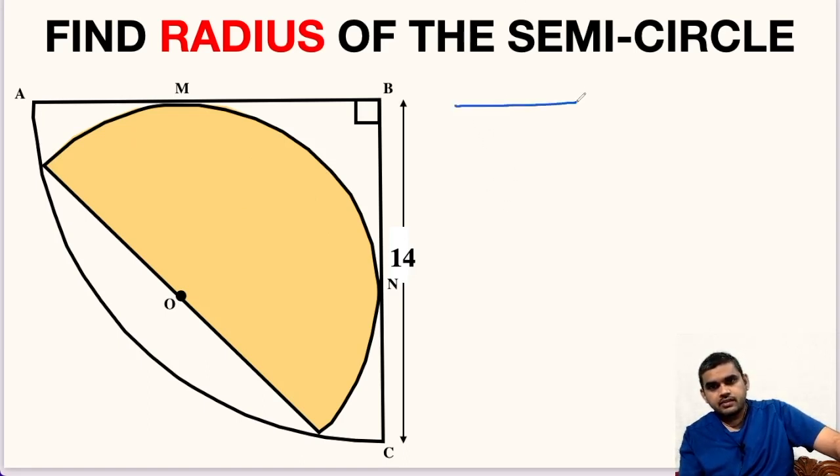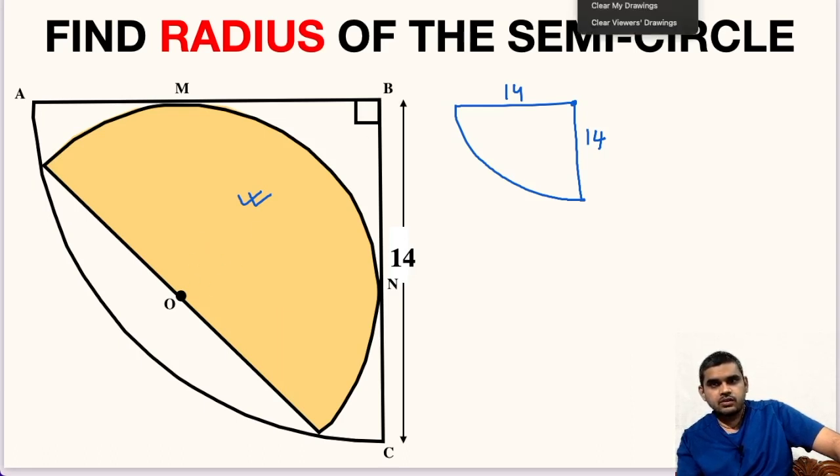First of all, we have a quarter circle. This is the quarter circle and its radius is given as 14 units. Inside it, we have a semicircle which is shown in the yellow shaded region. Our aim is to find the radius of this yellow semicircle.